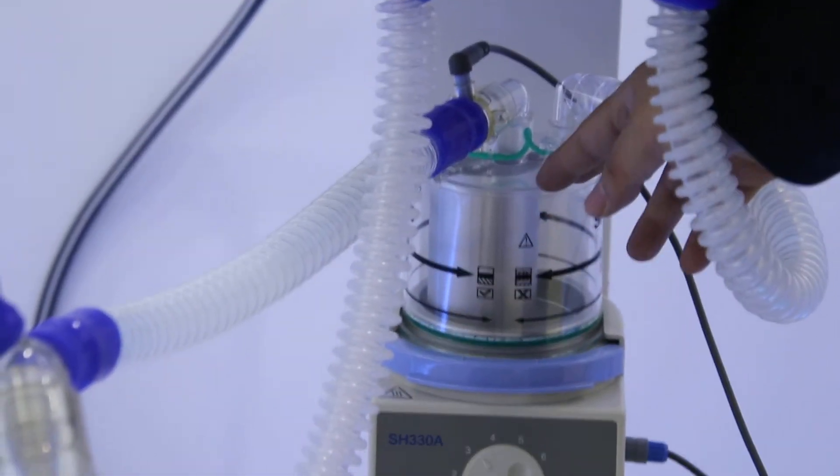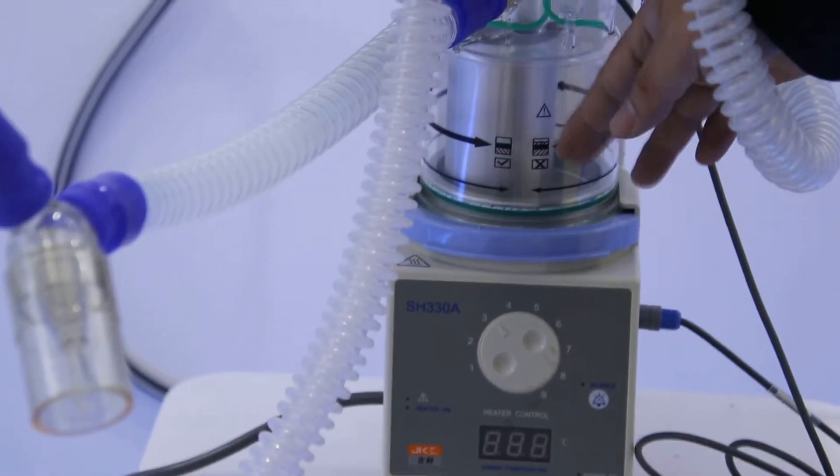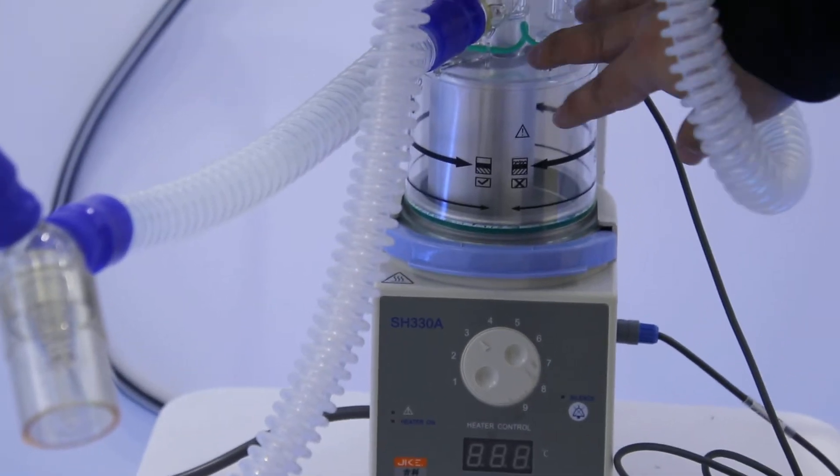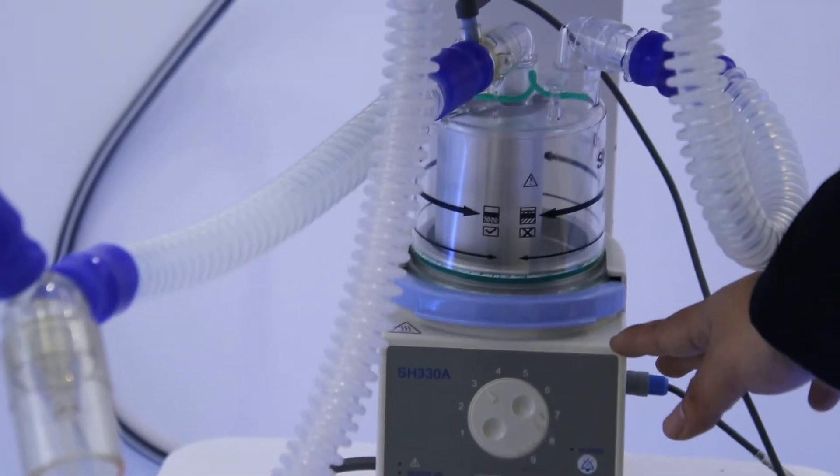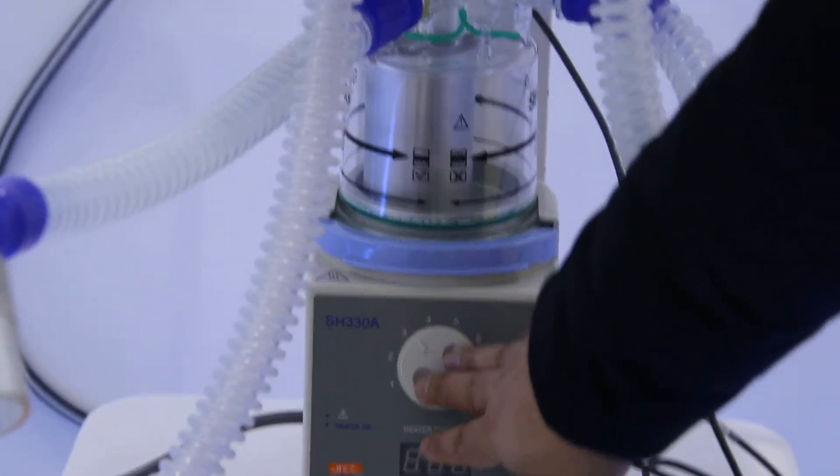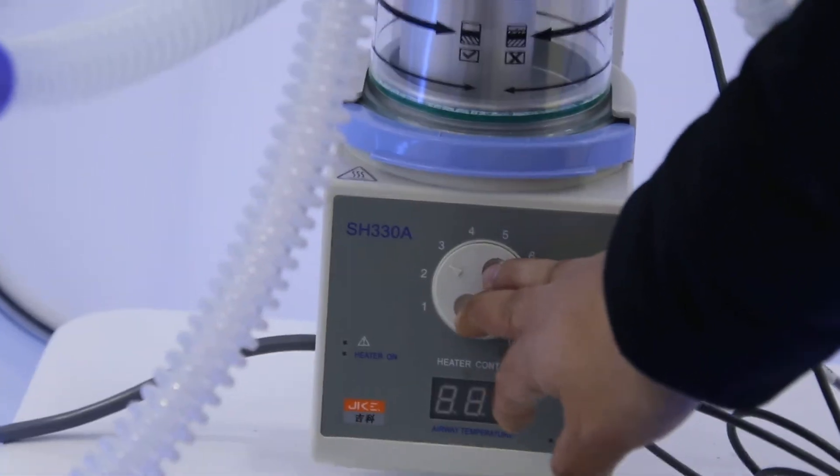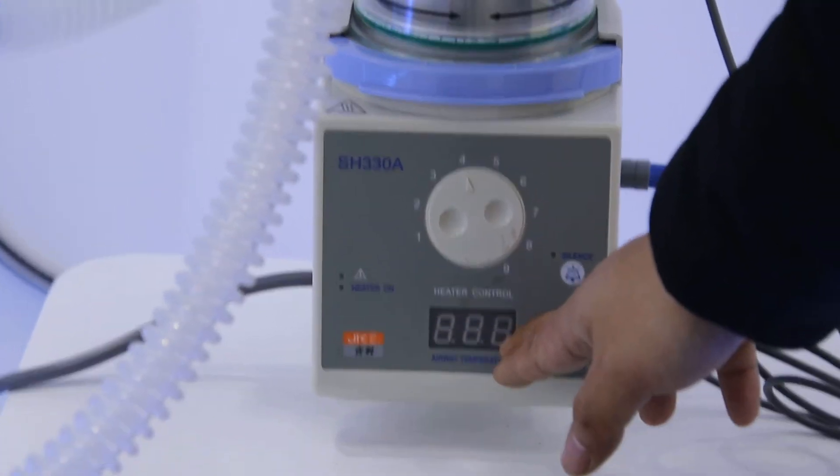And this one is the humidifier. For the humidifier, we have totally three types. And this one is the digital one. You can see here is the water trap and this one is the foundation. And we can use our finger very easily to change the temperature to different levels. And the temperature will be shown here in real time.